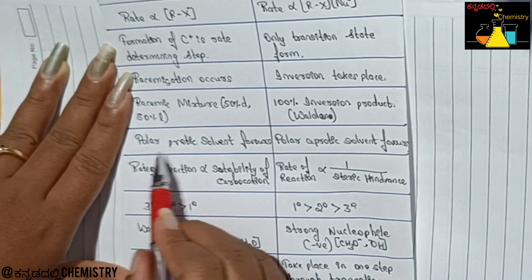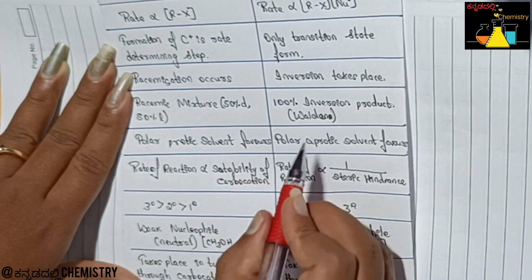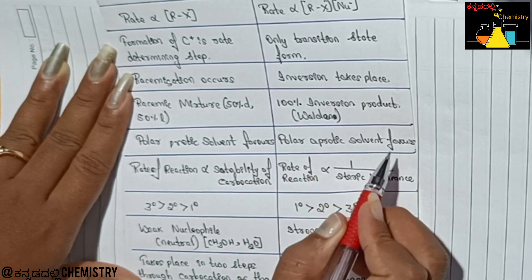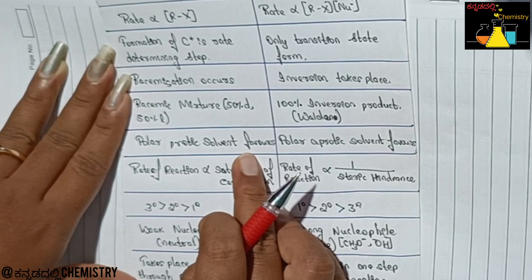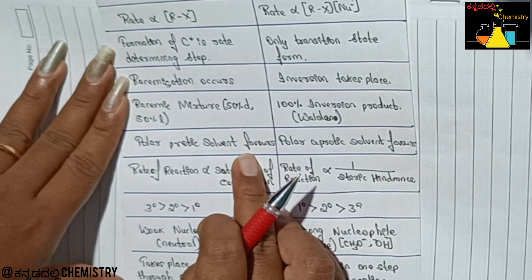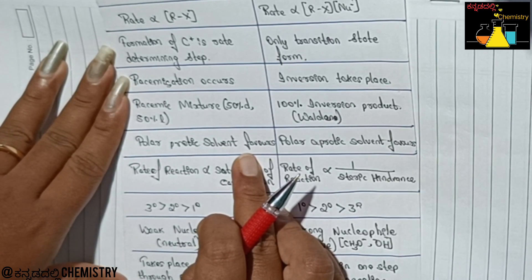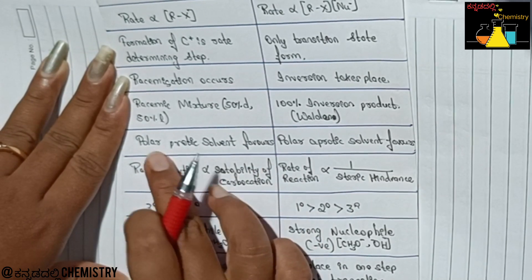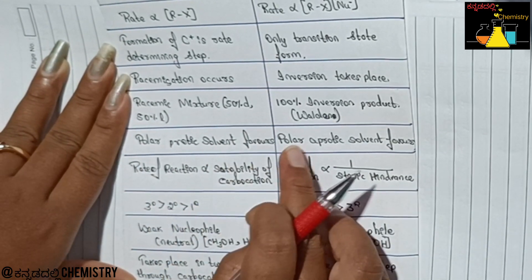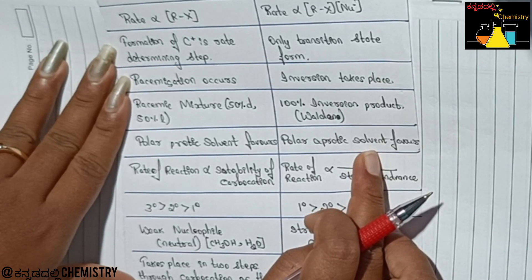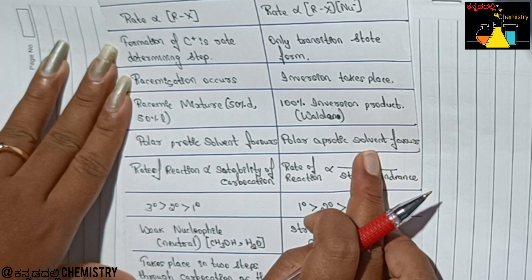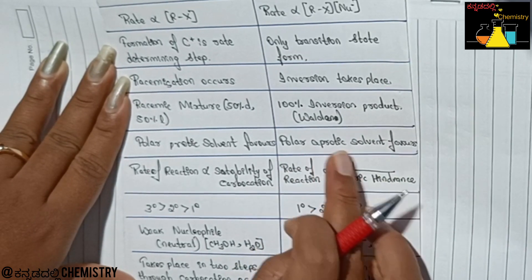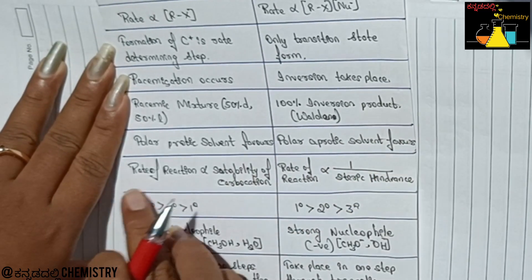For SN1, polar protic solvent is favored — for example, acetic acid, water, and alcohol. For SN2, polar aprotic solvent is favored — for example, dimethylformamide (DMF), dimethylacetamide (DMA), and dimethyl sulfoxide (DMSO).